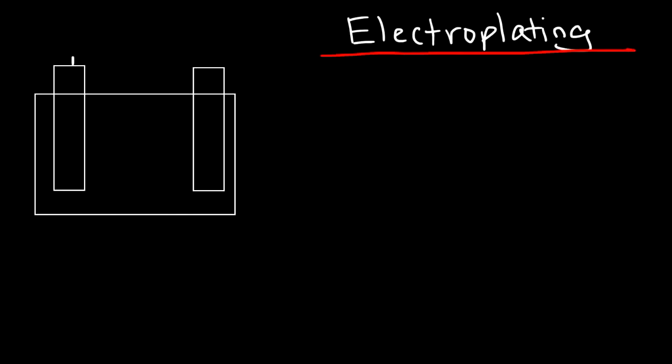In this video we're going to focus on electroplating. So let's say if we connect the battery across two electrodes - here's the positive terminal of the battery and this is the negative terminal of the battery - and we're going to use two copper electrodes. Now let's say we have an aqueous solution and in the solution there are copper ions.